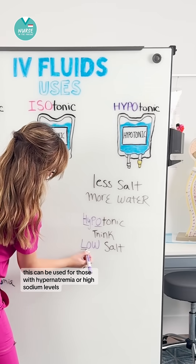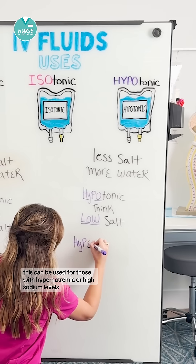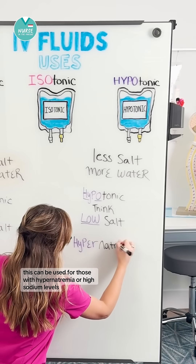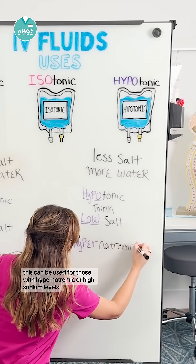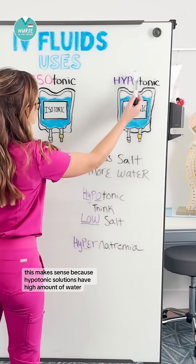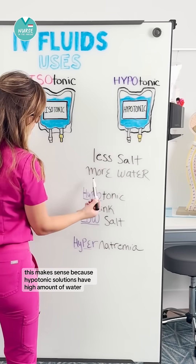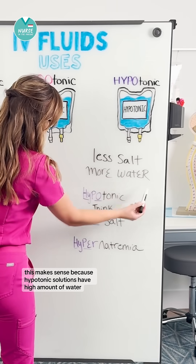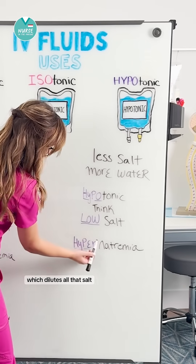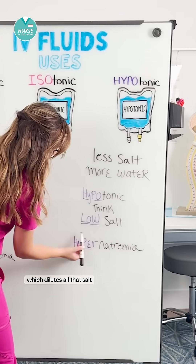Hypotonic solutions can be used for those with hypernatremia, or high sodium levels. This makes sense because hypotonic solutions have a high amount of water, which dilutes all that salt.